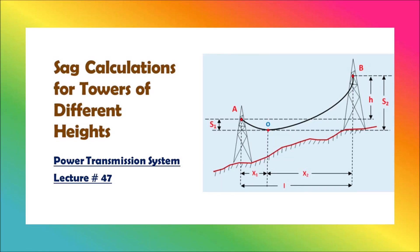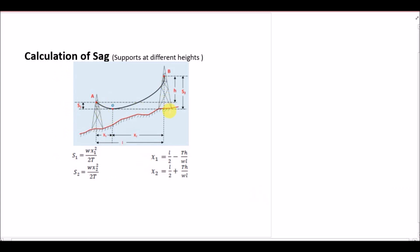In this lecture we are going to talk about the sag of the conductor between towers of different height. Suppose we have two different towers which are not at the same height — they are in some hilly area. For this particular case we have two different sags: one when we are looking from tower A, which is sag s1, and one from tower B, which is sag s2. The difference of levels between the two towers is represented by h.